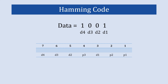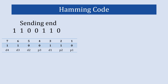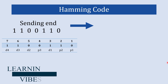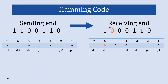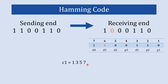Now let's look at error detection. We send the Hamming code, but at the receiving end one bit gets corrupted. We perform the same parity check calculation used to create the parity bits, but now we call the results c1, c2, and c3 — the checking bits. C1 checks bit positions 1, 3, 5, and 7. Using even parity, if the count of 1s is even, c1 = 0.